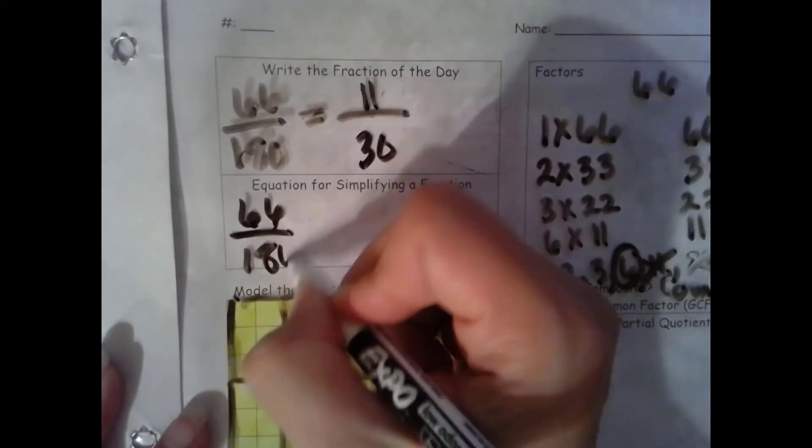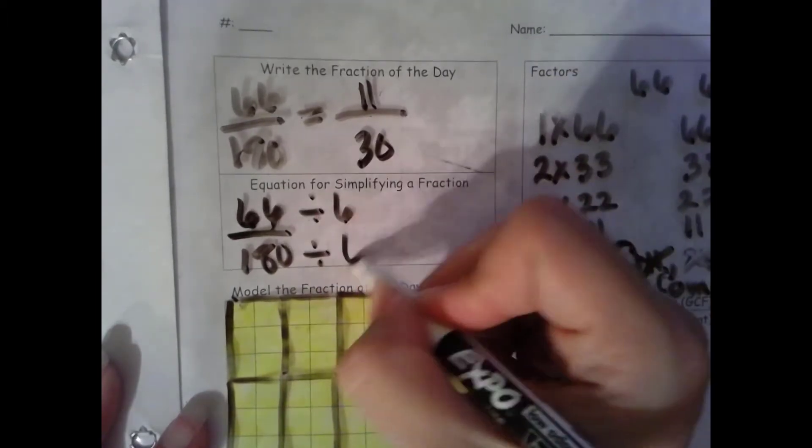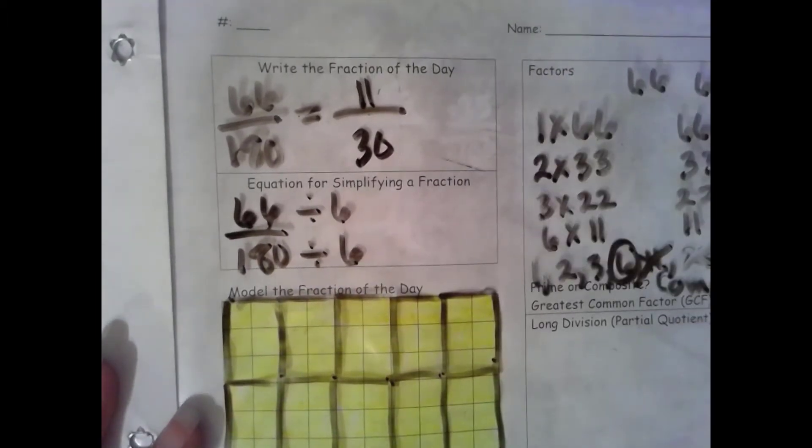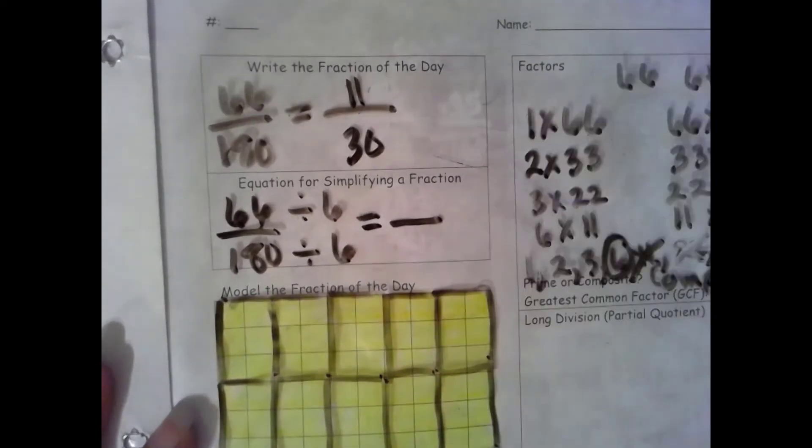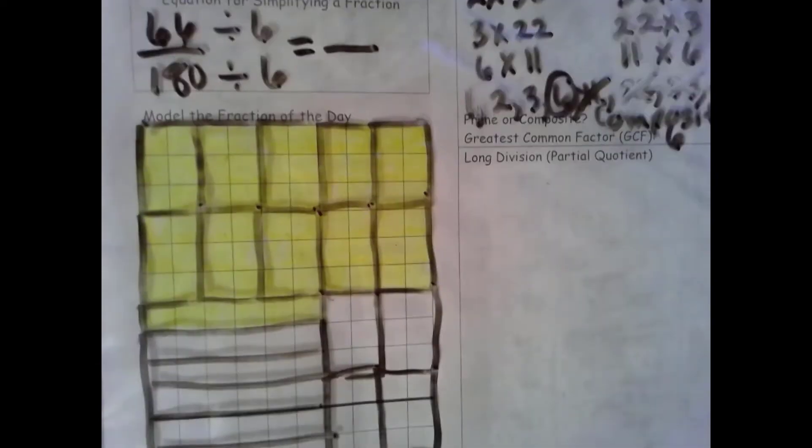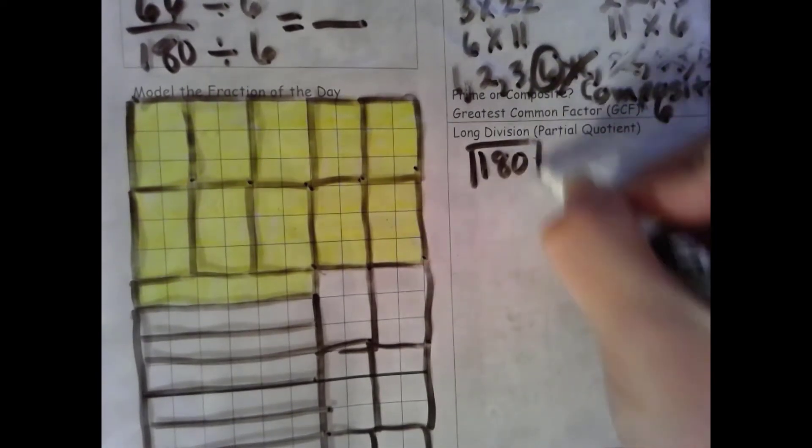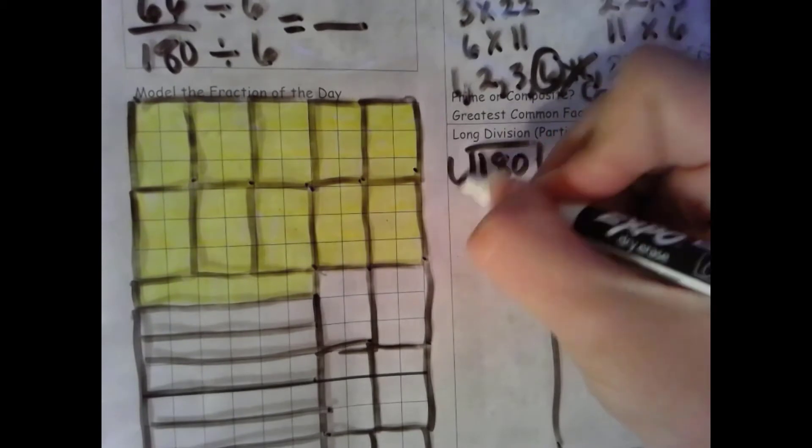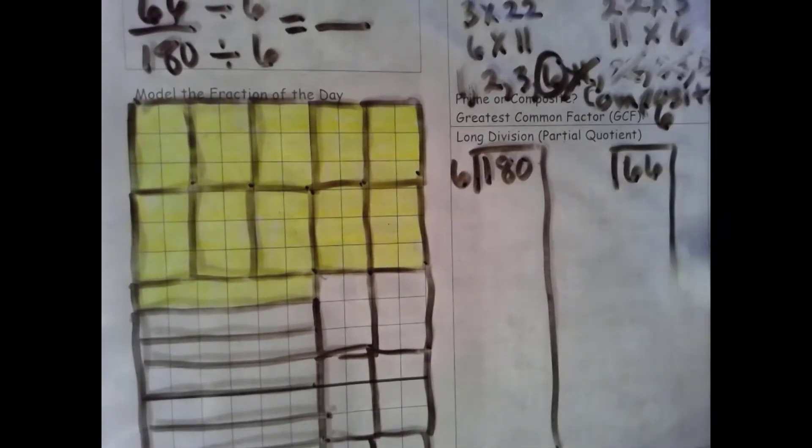So 11 thirtieths is what we get with our division using our model. Let's see what we get using our algorithm. We're dividing both by groups of 6 because that's what we did, we made everything into groups of 6. So we're going to divide 180 into groups of 6 using that repeated subtraction and 66 into groups of 6.